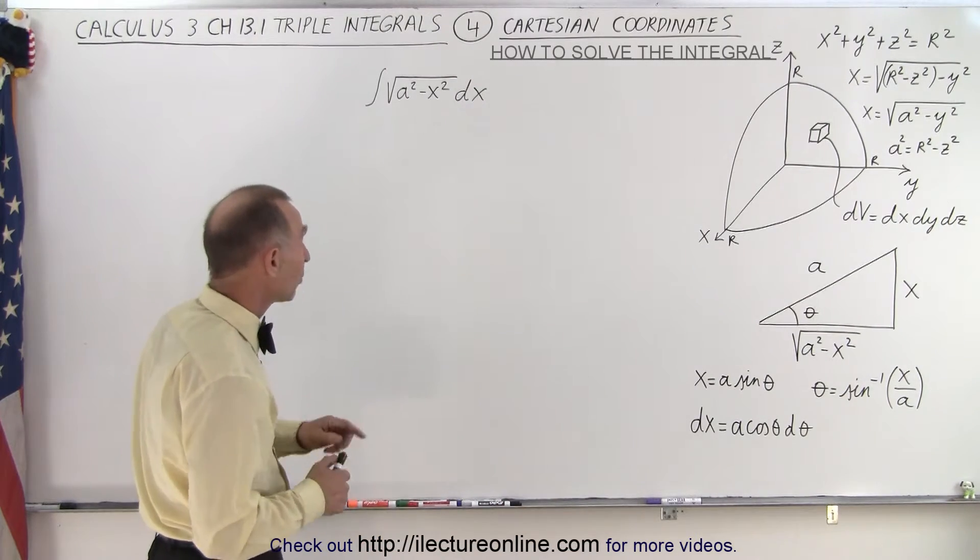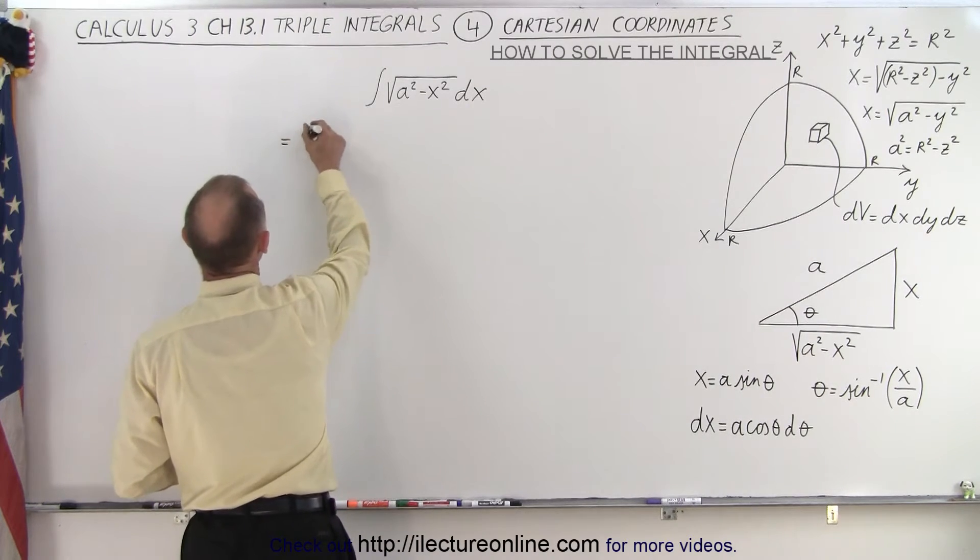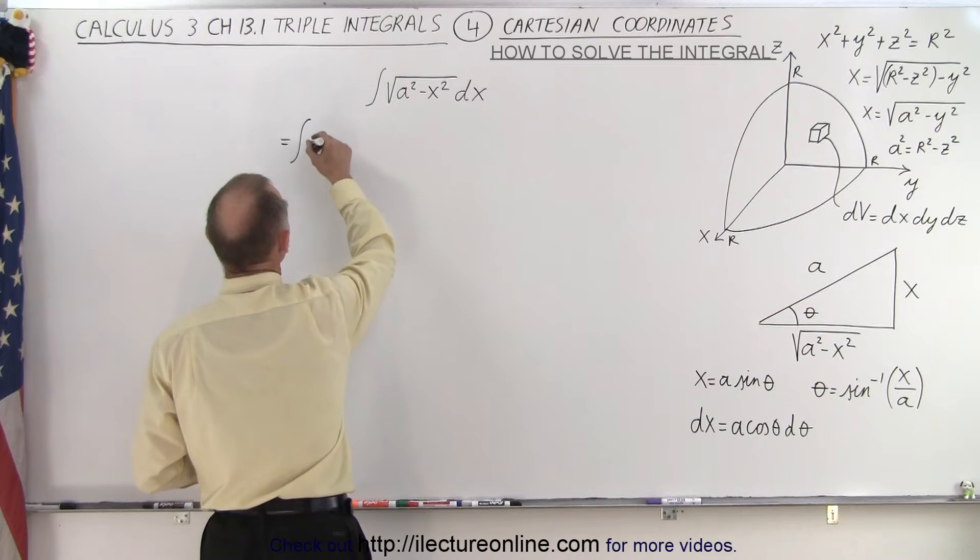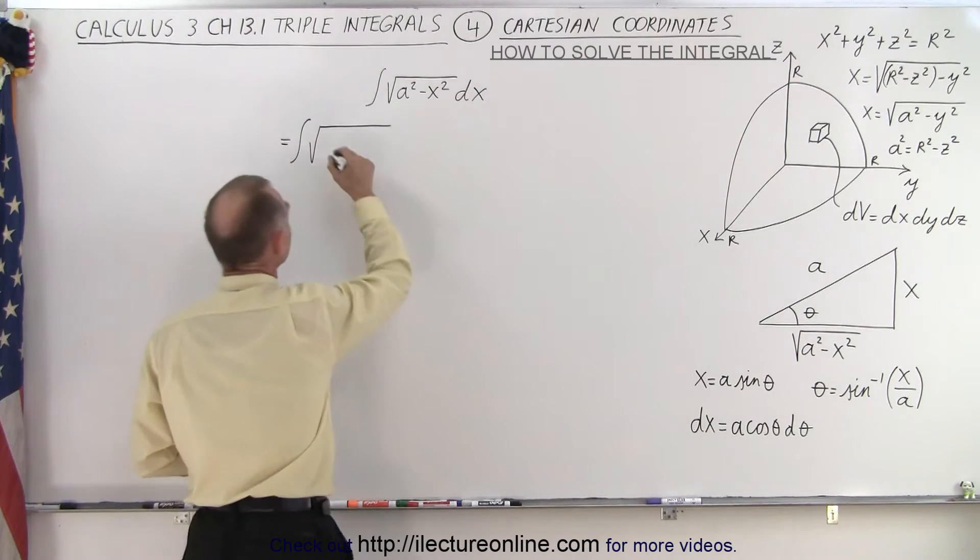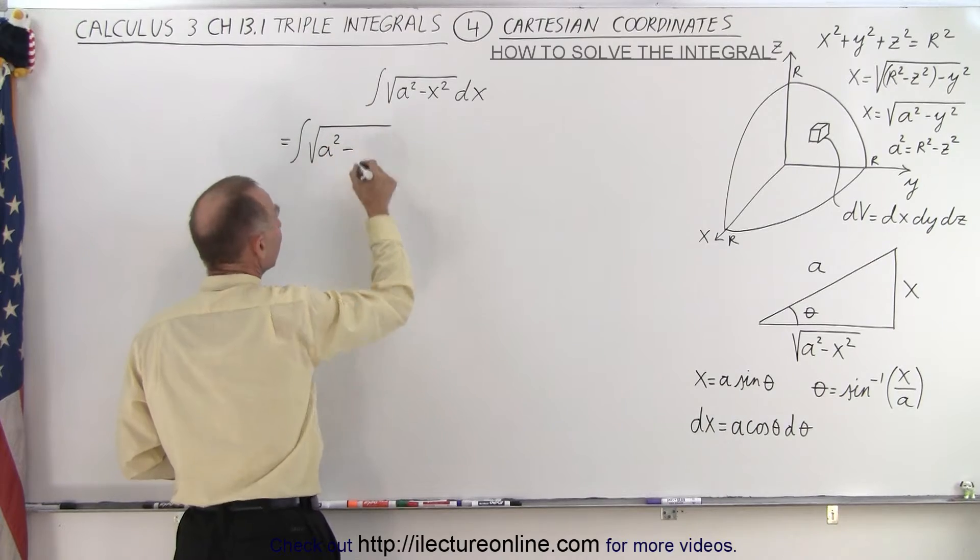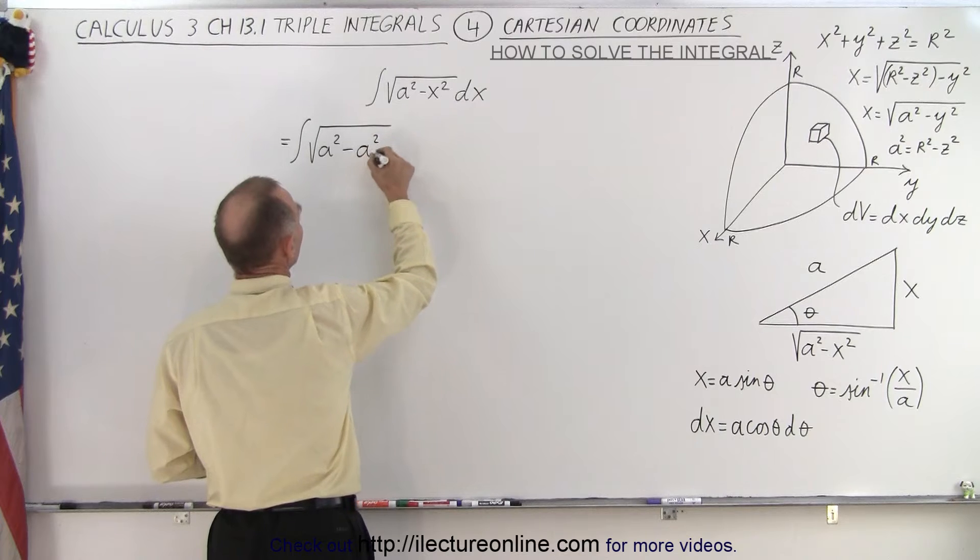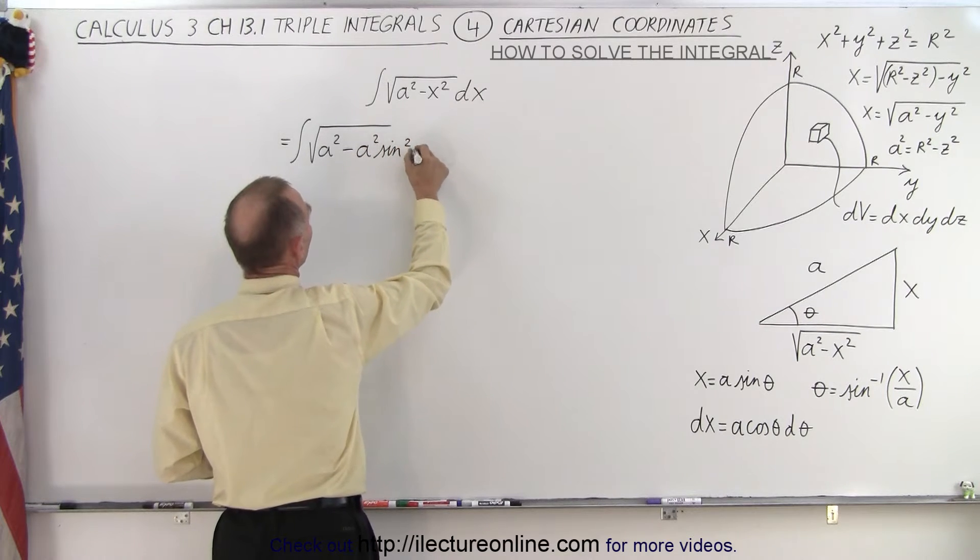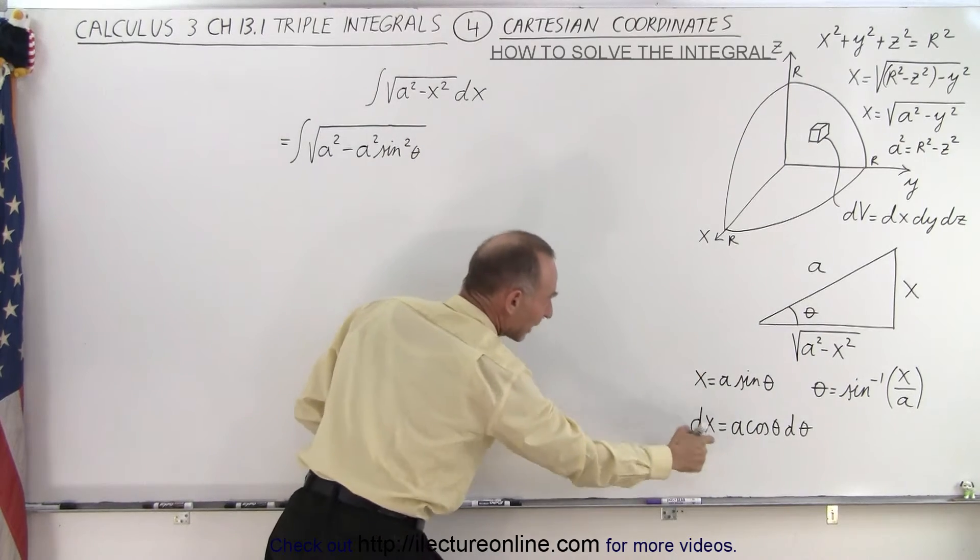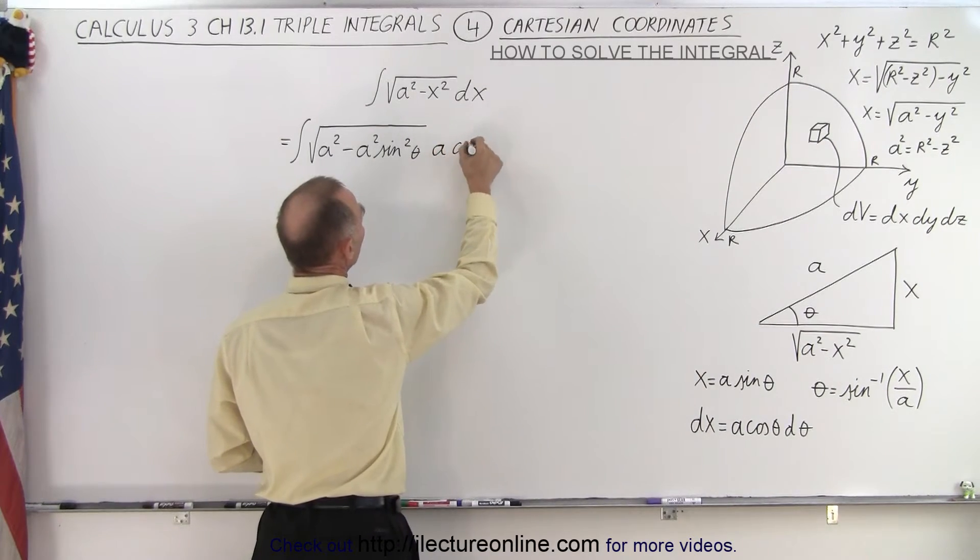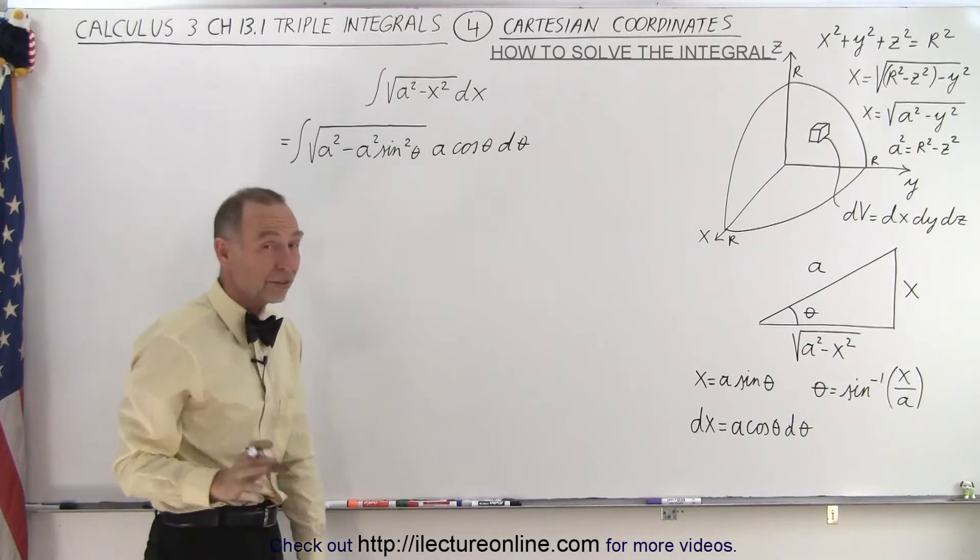Because what we can do now is we can make that substitution. So this becomes equal to the integral of the square root of a squared minus x squared. x squared would be a squared times sine squared, so it would be a squared times the sine squared of theta. And then dx is defined as a cosine theta d theta like this.